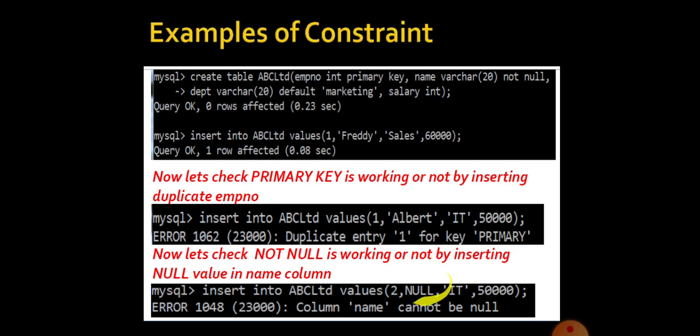So in this query, we are trying to enter a null value. After executing this query, you will get an error message like: column name cannot be null. Why? Because column name having a constraint like not null. Is it clear how to give primary key and not null and how to check whether it is working or not?